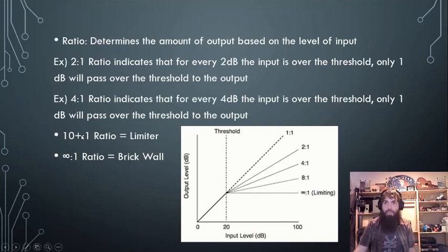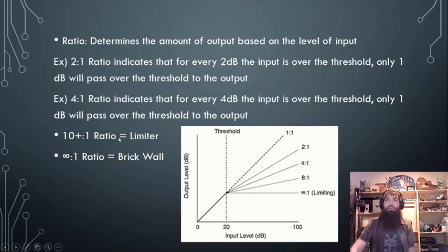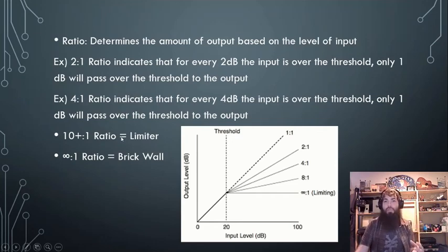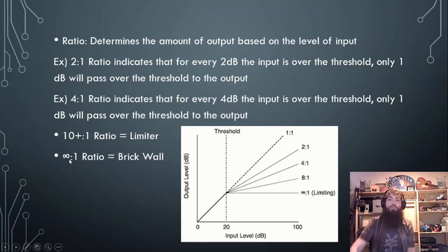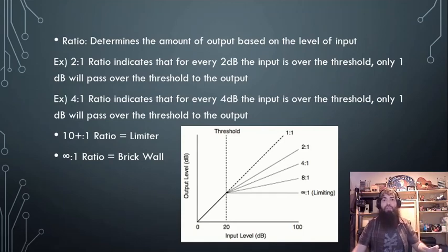At a 10:1 ratio, we start to call it a limiter. At that point, the signal would have to be ten decibels hotter than the threshold to allow even one decibel over — that's pretty extreme compression.